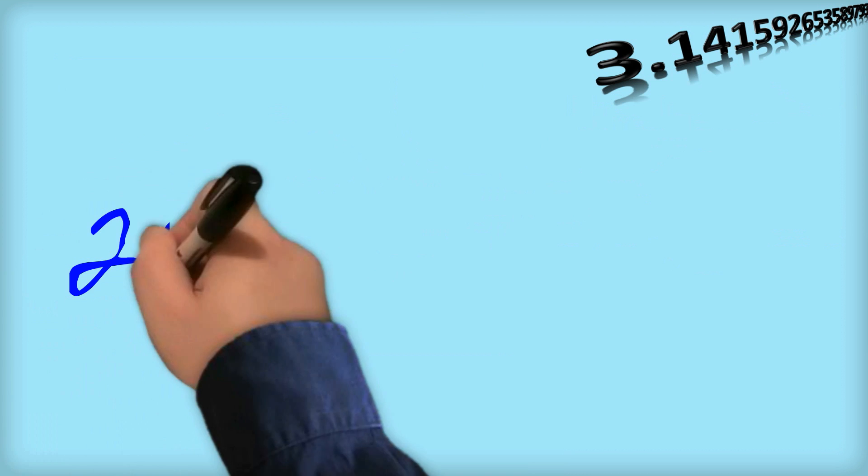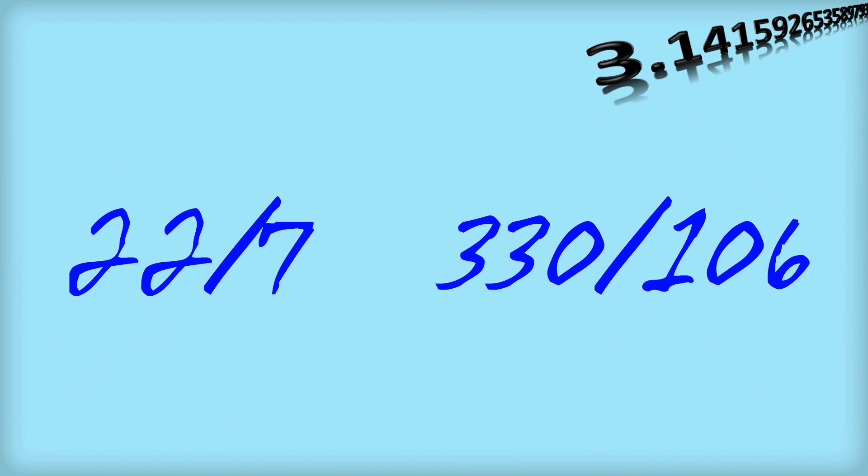So before I rush through some formulas, a few comments. Firstly, pi cannot be expressed as 22 on 7 or 330 on 106. In fact, it can't be expressed as any fraction. I know a few irrational people, and I know a few irrational numbers, and pi is one of them.